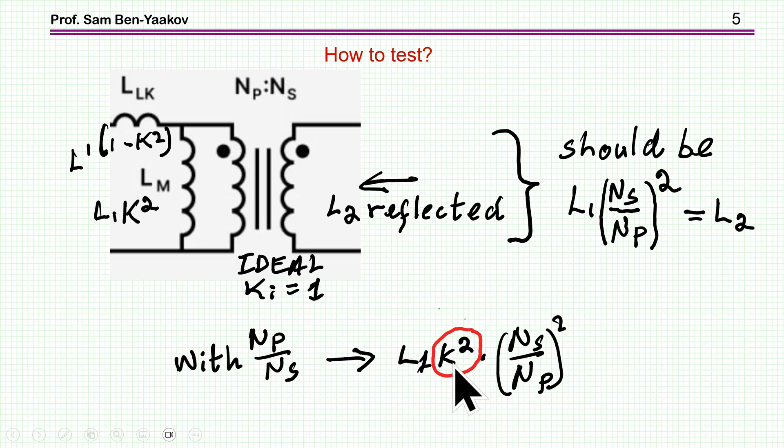So I'm getting this value here, k², this is incorrect. I should get this value. So this is incorrect, meaning that this turns ratio is incorrect.